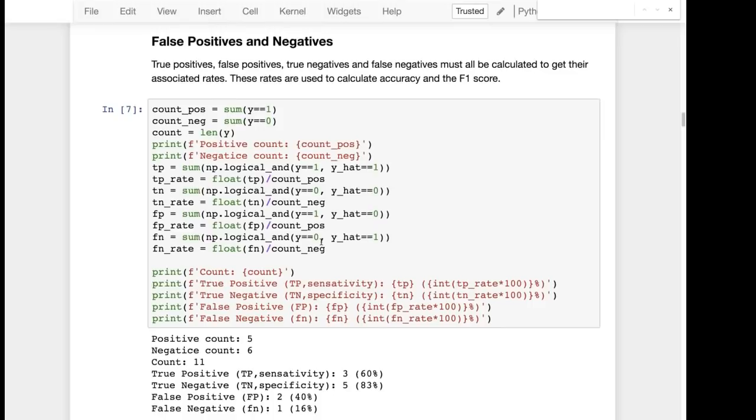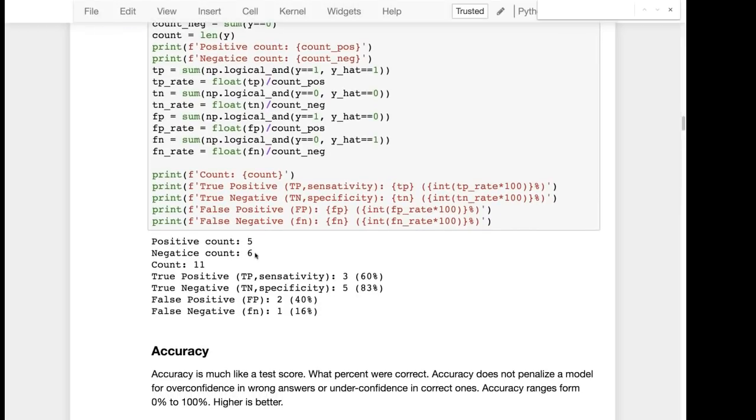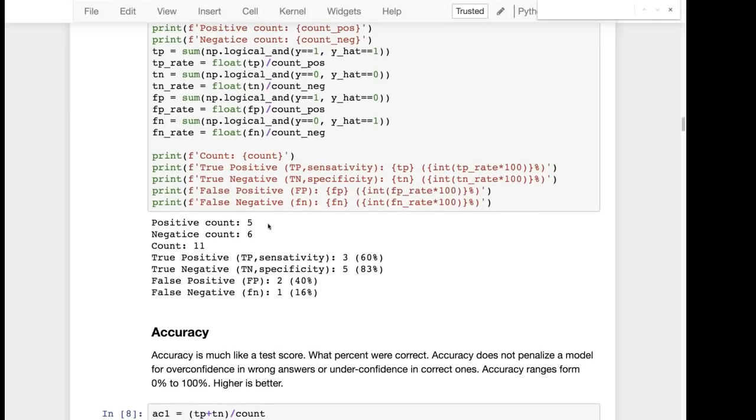I give you the code all here to calculate this. I count how many false positives we had, how many negative count. So this is the total number of positive values we had, the total number of negative values that we have. The total count better sum to that. So there's 11 total.